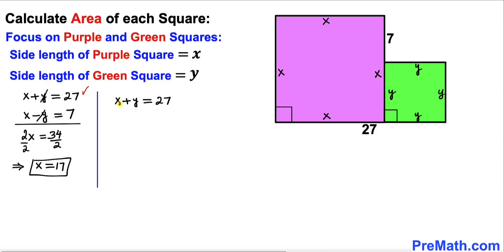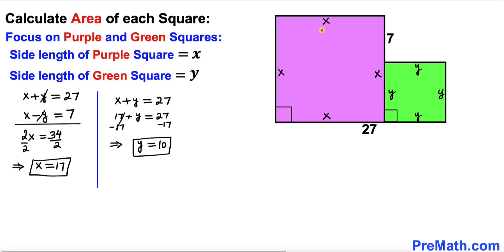Copying down the first equation, x plus y equals 27, and substituting x equals 17, I get 17 plus y equals 27. Subtracting 17 from both sides, our y value turns out to be 10 units. So the side length of the purple square is 17 units and the side length of the green square is 10 units.